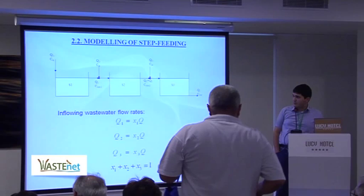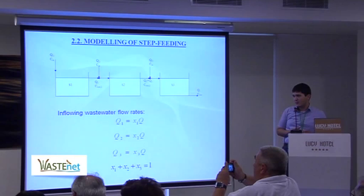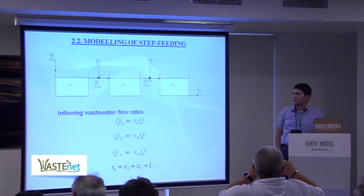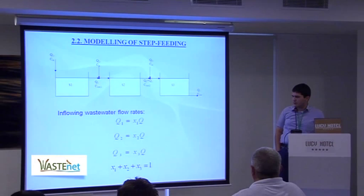About step feeding — in our case we have a maximum of three feeding points. We split the wastewater and enter it at more than one point along the tank, meaning we have different flow rates Q1, Q2, and Q3. We find these values using the step feeding percentages X1, X2, and X3.